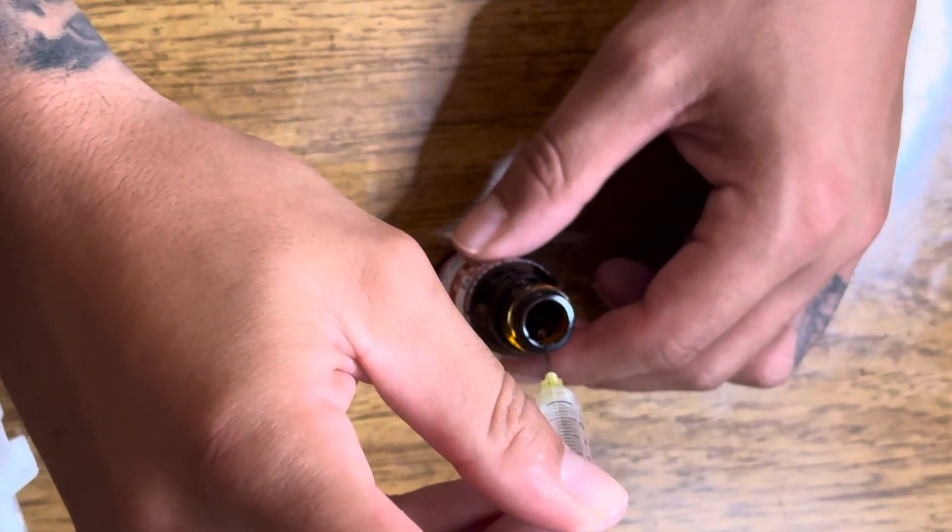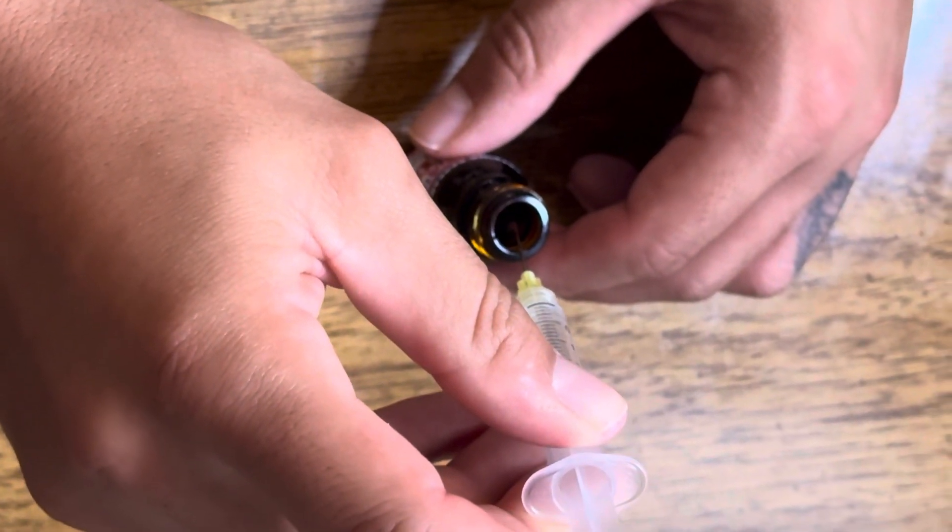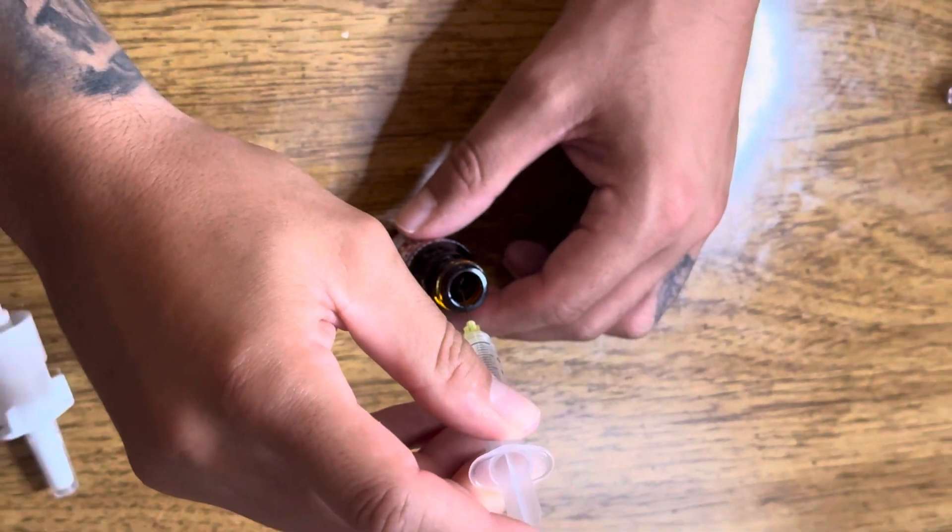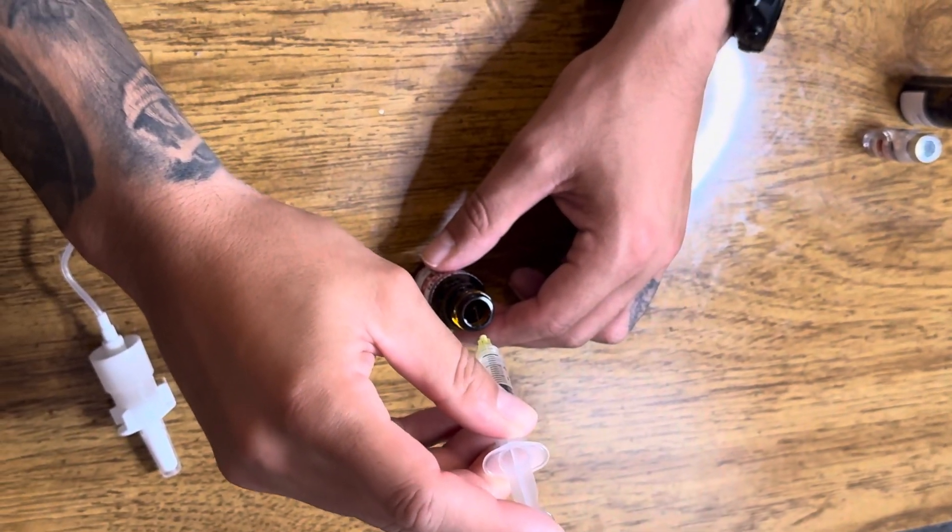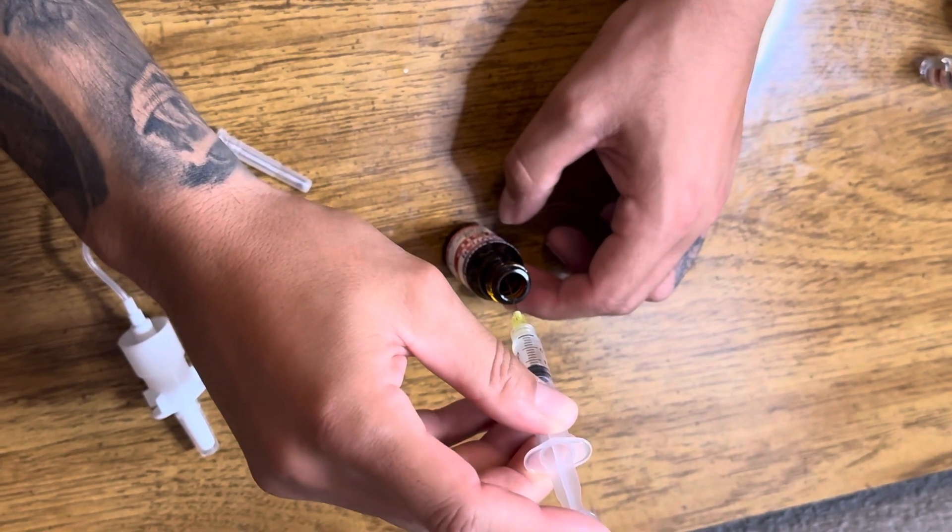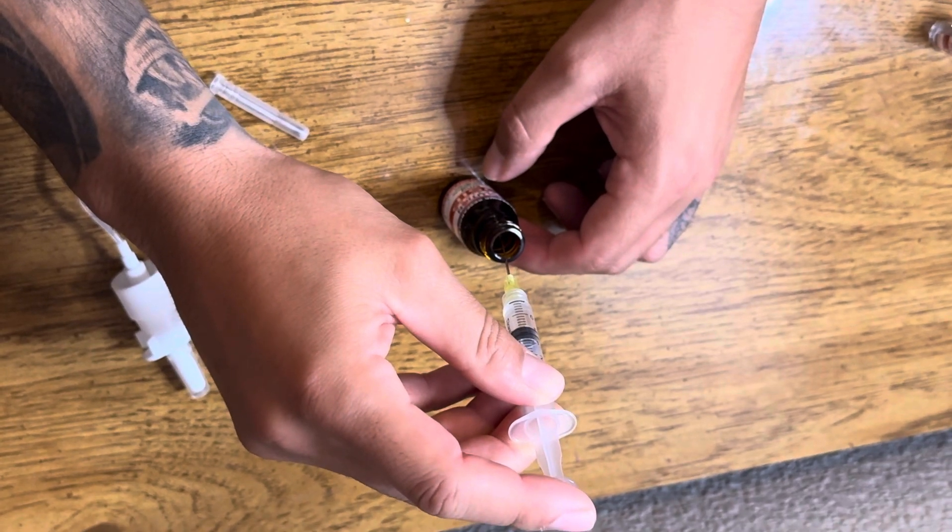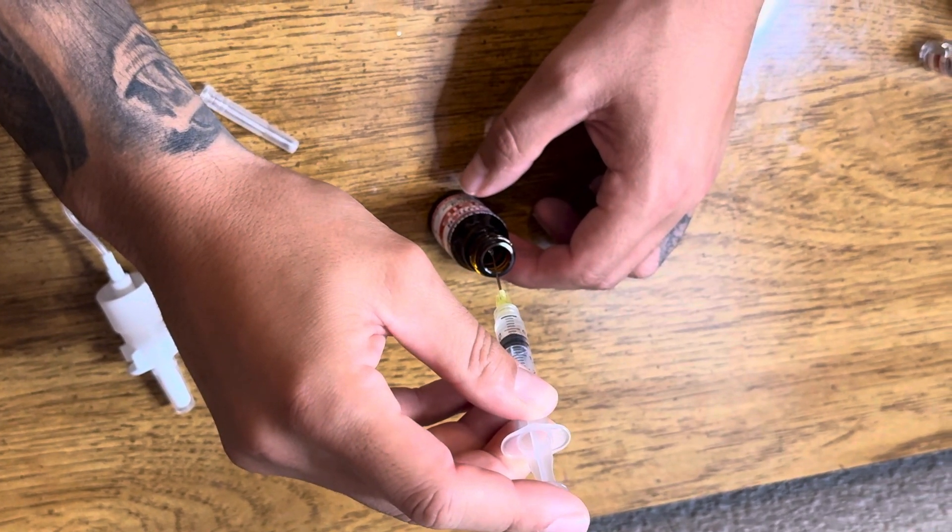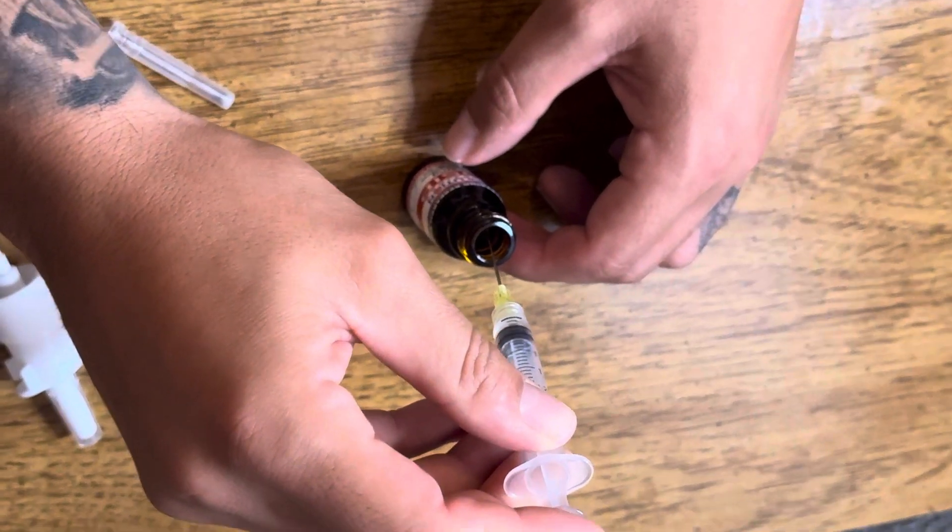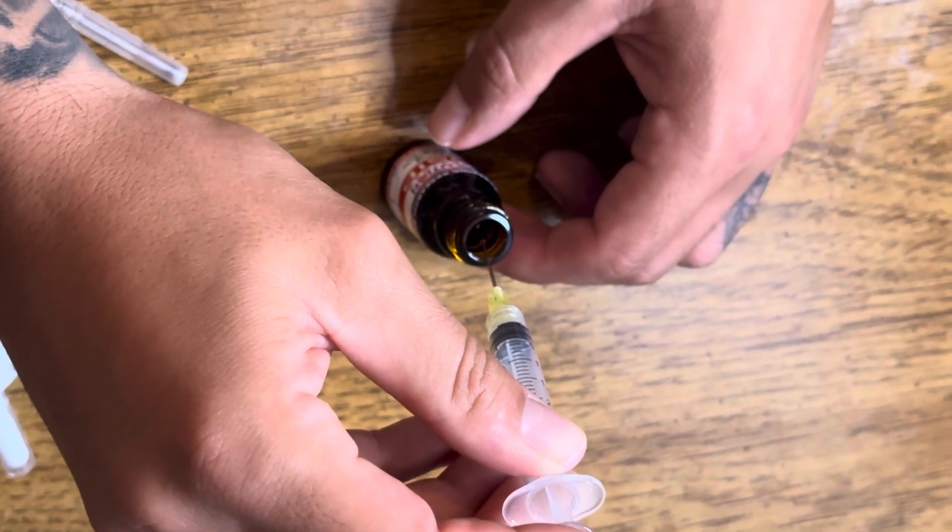Now I'm adding the final two milliliters of water. In total, you should have 10 milliliters of product into your spray vial. That means two for the peptide and eight milliliters of additional water.